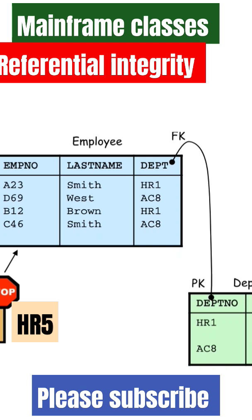Our next topic is referential integrity. Referential integrity is a parent-child relationship between two tables, established using the foreign key and the primary key. Here, the foreign key is in the employee table and the primary key is in the department table, which refers to the primary key in the parent table. Because of this, the relationship is called referential integrity.